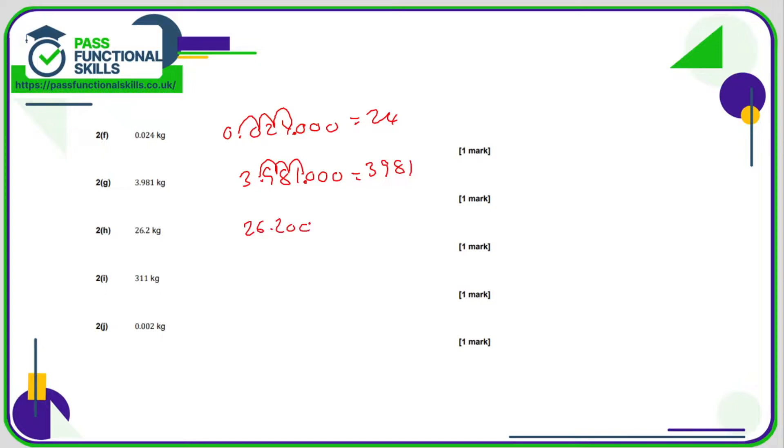26.2. Again decimal point is moving three positions because we're multiplying by a thousand. So it's going to be 26200.0. But you can forget the point zero. So just leave it as 26,200. 311 multiplied by a thousand. Just stick three zeros on the end.